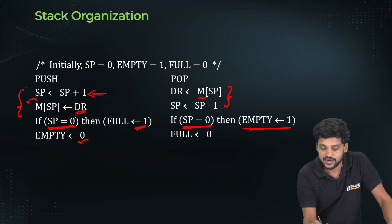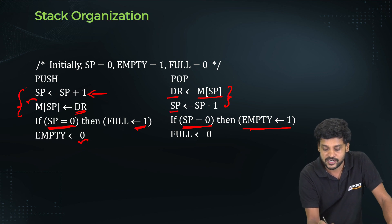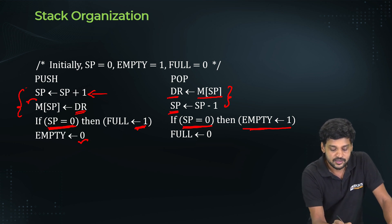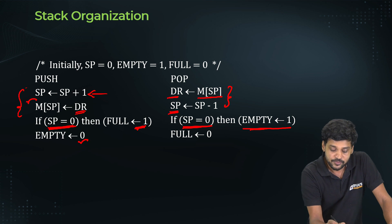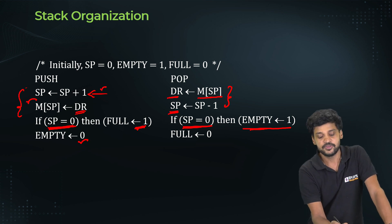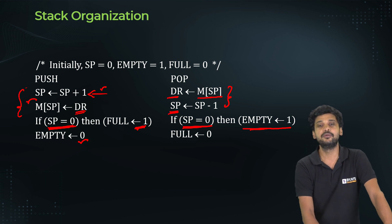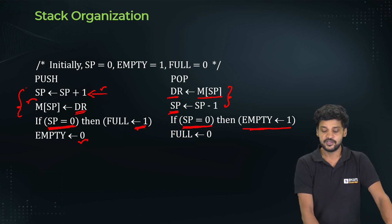In the pop operation, the sub-operations are: first, contents are transferred from memory[SP] to the data register; then the stack pointer is decremented. In the push operation it is the reverse: first the stack pointer is incremented, then the contents of the data register are transferred to memory[SP].